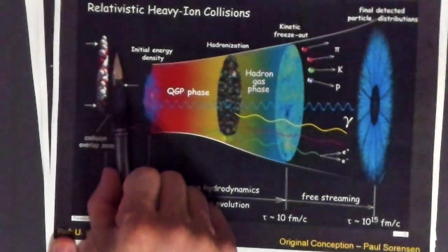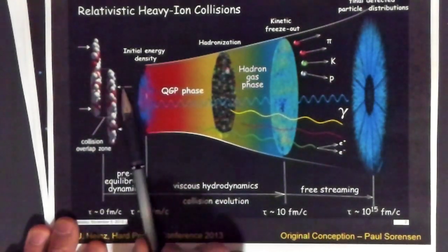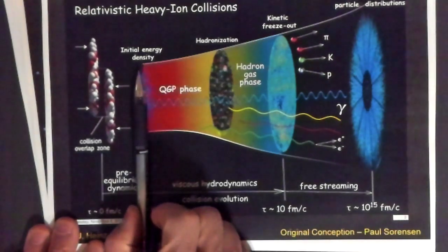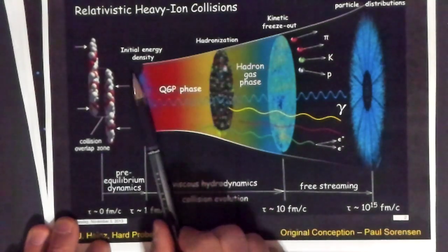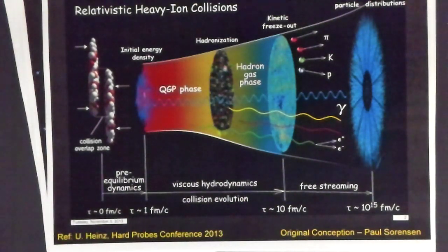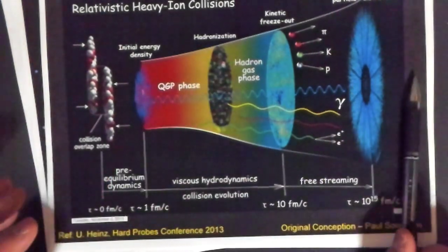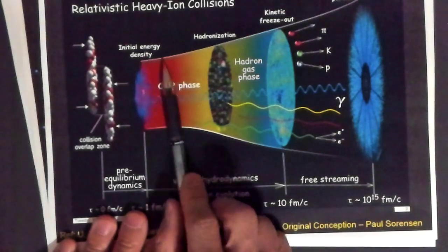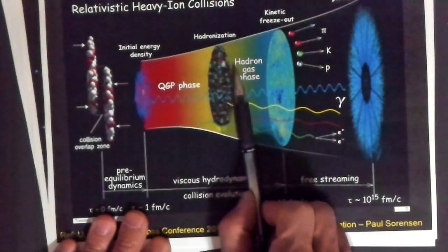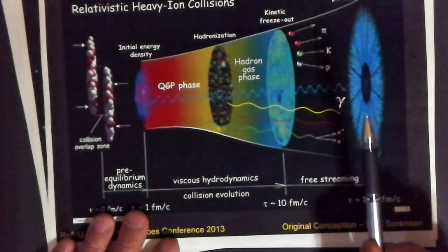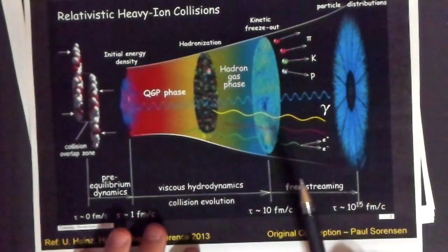There are different stages: pre-equilibrium dynamics before the system is really in equilibrium, then it equilibrates and you have the viscous hydrodynamics phase — where it acts like a fluid with some viscosity. Then it transitions to a hadron gas, and finally you have decoupled particles free-streaming away from each other.